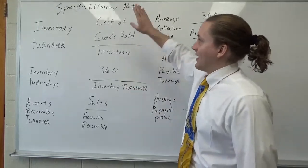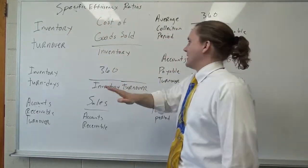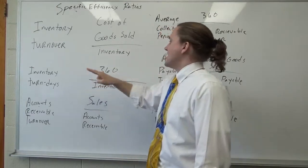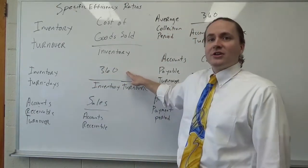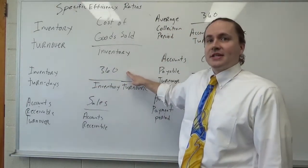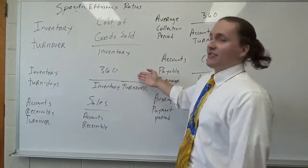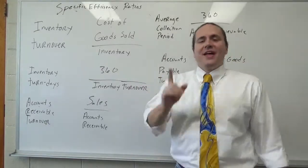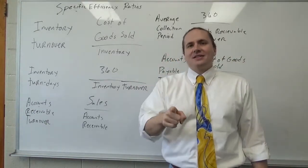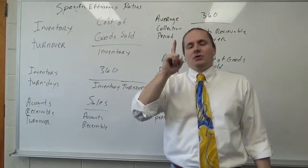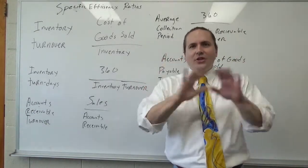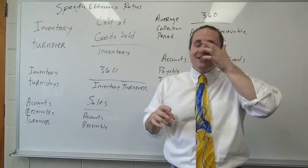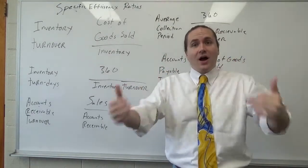You take this number — your inventory turnover — it becomes the denominator of your inventory turn in days, and the numerator is 360. Let's say I have the number 45 out of here. That tells me that throughout the year, normally I have about 45 days of inventory on hand.